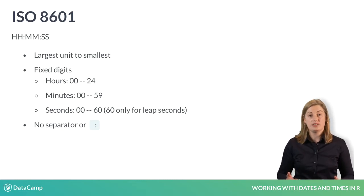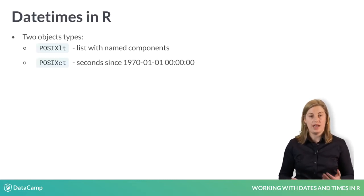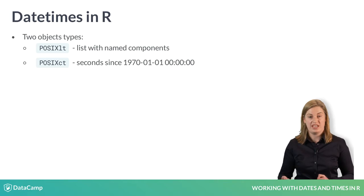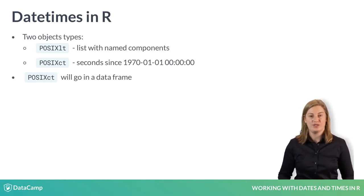There are two built-in types of objects for date-times in R: POSIXLT and POSIXCT. POSIXLT stores a date in a list with components for each unit, whereas POSIXCT stores the date as the number of seconds since the beginning of 1970. Because of its simpler structure, POSIXCT is more amenable to being stored in data frames, and is the one we'll focus on exclusively.